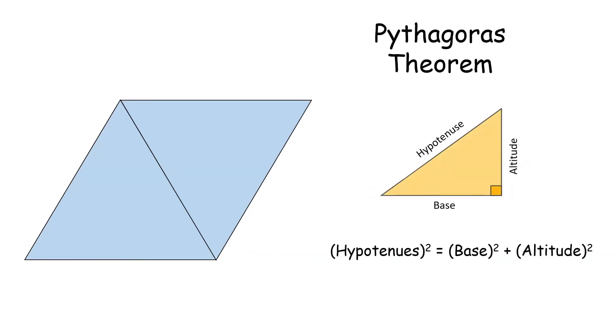To calculate the height or altitude of the triangle, you can use the Pythagorean theorem, where the squared hypotenuse is equal to the squared base plus the squared altitude.